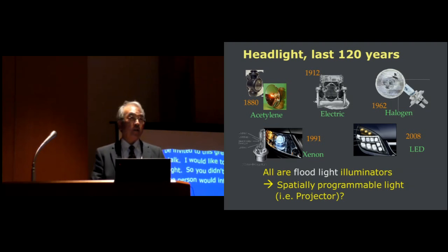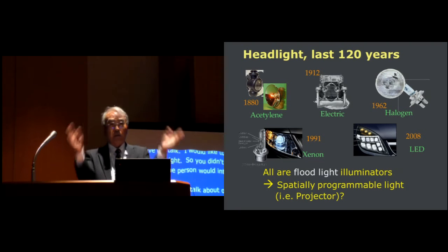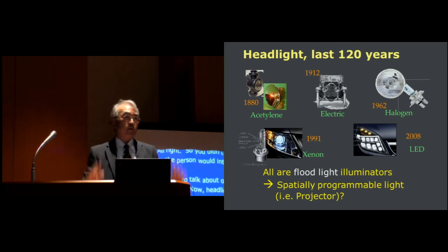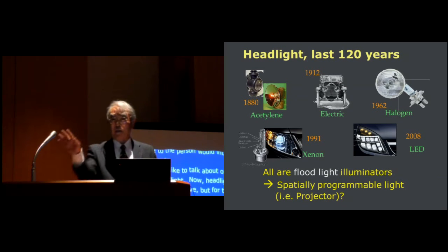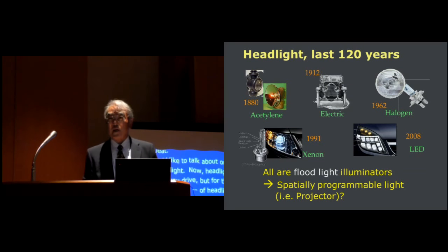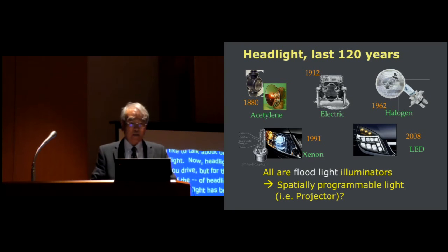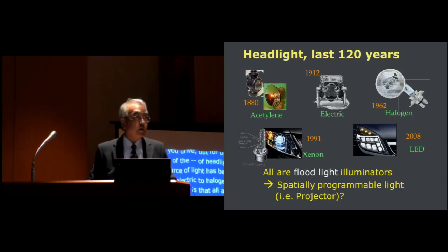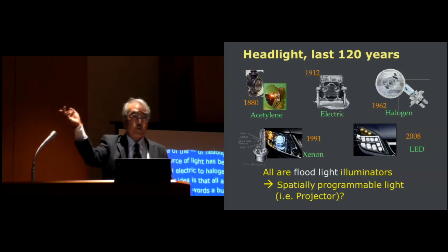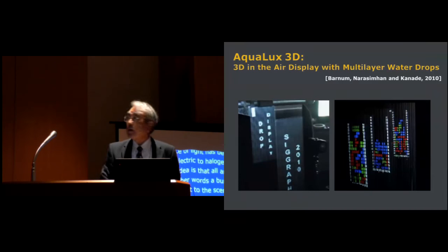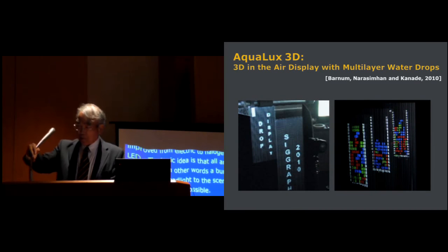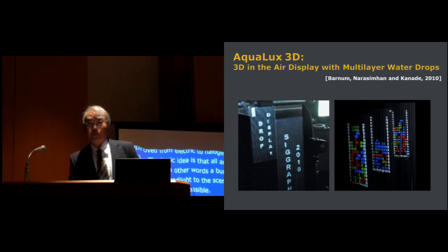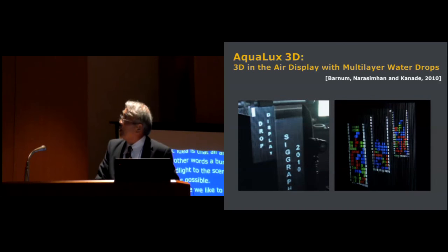The source of light has been changing or improved from acetylene to electric to halogen, xenon, and LED. But the basic idea is that all are floodlight illuminators - a bunch of light goes out of your headlight to the scene and shine the world as bright as possible. However, what we like to discuss is what happens if we change the headlight to a spatially programmable light source. In other words, a projector.